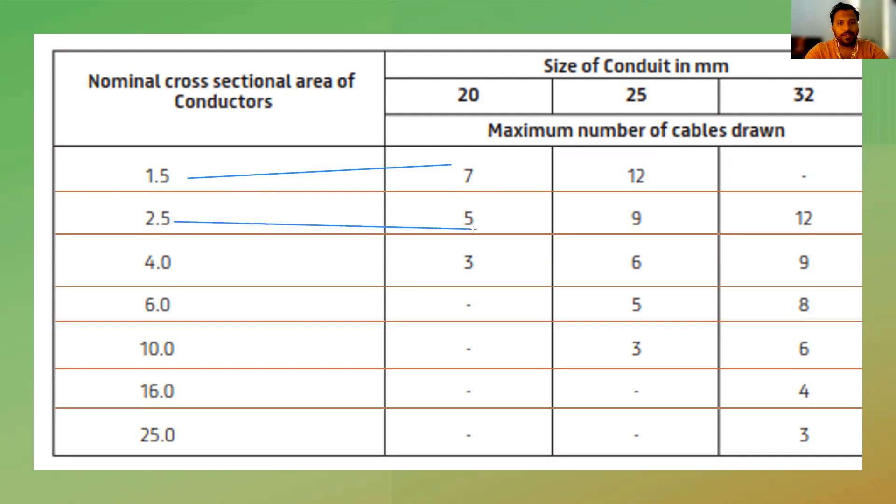Similarly, for 2.5 mm wire, you have 5, and for 4 mm, you have 3. Similarly, for 25 mm conduit, for 1.5 mm wire, 12 wires can be drawn, for 2.5 mm, 9 wires, and for 4 mm, 6 wires.